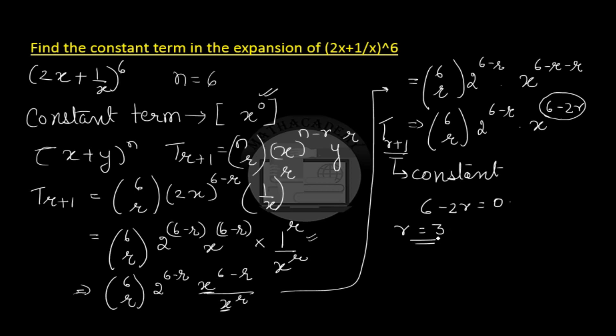If r is 3 then the r plus 1th term, which is basically t4, which is the 4th term. So the 4th term in the above expansion will be a constant term.